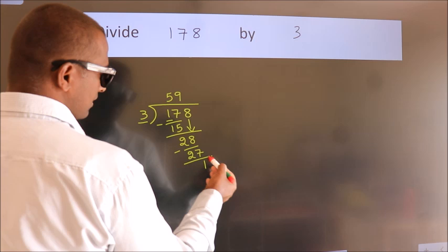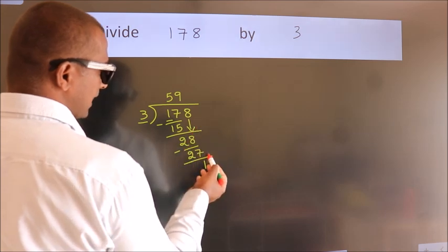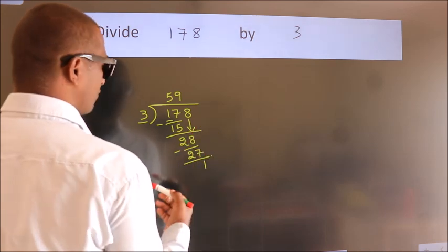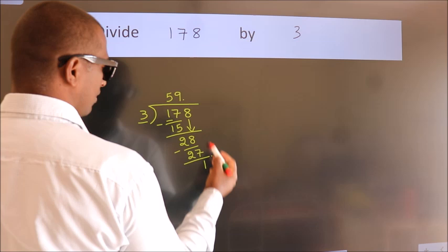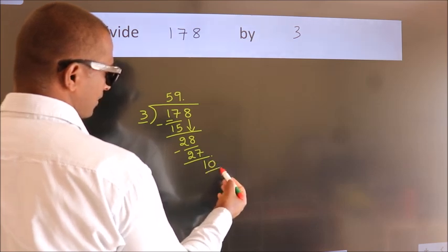After this, no more numbers to bring down. So what we do is, we put dot, take 0. So 10.